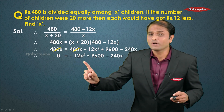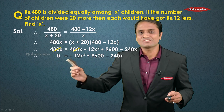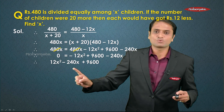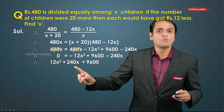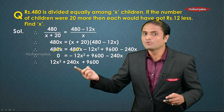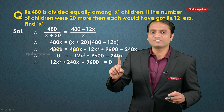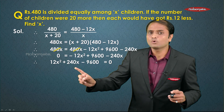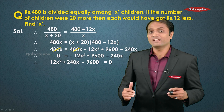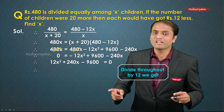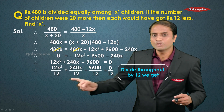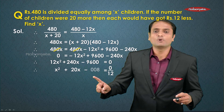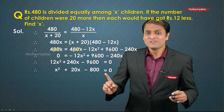The x² term is negative, so we transfer all terms to the LHS: minus 12x² becomes plus 12x², minus 240x becomes plus 240x, and plus 9600 becomes minus 9600, with zero on the RHS. All coefficients are divisible by 12, so dividing throughout by 12 gives: x² plus 20x minus 800 equals 0.